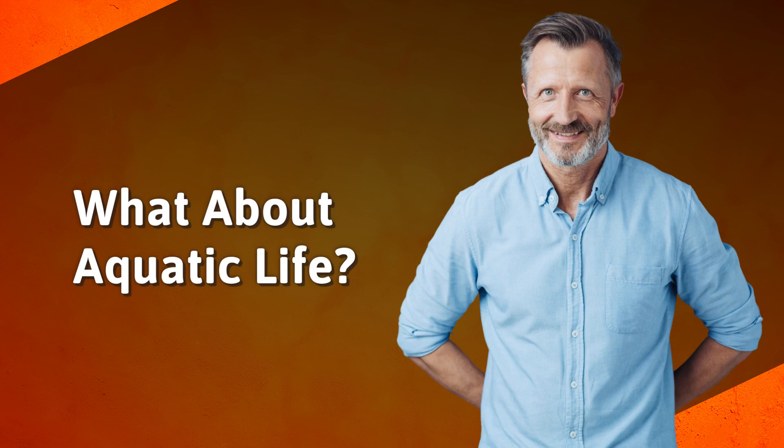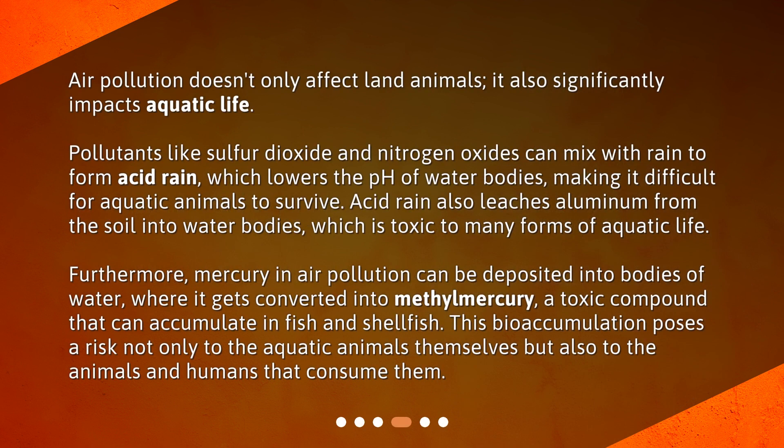What about aquatic life? Air pollution doesn't only affect land animals — it also significantly impacts aquatic life. Pollutants like sulfur dioxide and nitrogen oxides can mix with rain to form acid rain, which lowers the pH of water bodies, making it difficult for aquatic animals to survive. Acid rain also leaches aluminum from the soil into water bodies, which is toxic to many forms of aquatic life.